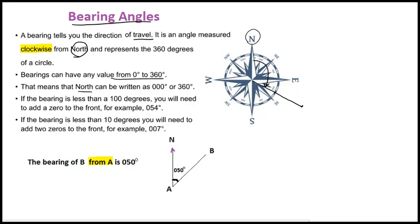North can be written as 0 degree or 360 degree. If the bearing is less than 100 degrees, you will put a zero before the value. If the bearing is less than 10 degrees, you will need to add two zeros to the front.